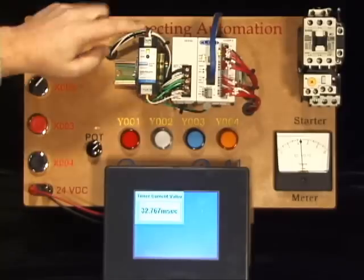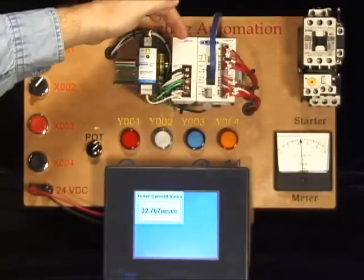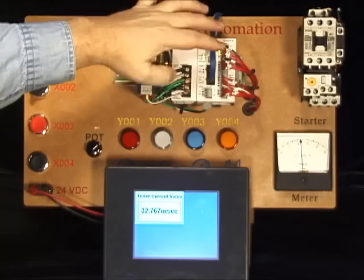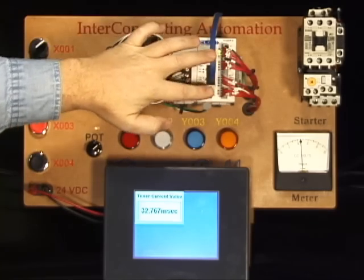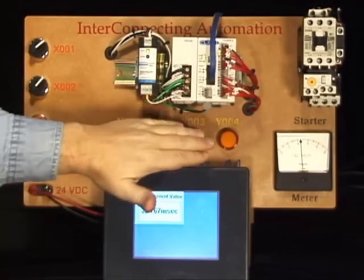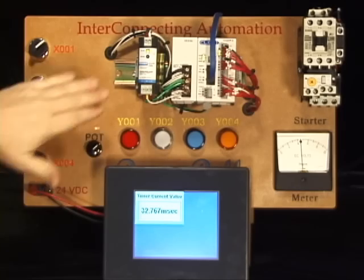We have a power supply, a Click PLC power supply, and a Click PLC which has four inputs, four outputs, two analog in, two analog out. Four indicator lights are wired up to the outputs, and these switches here are wired up to the inputs.